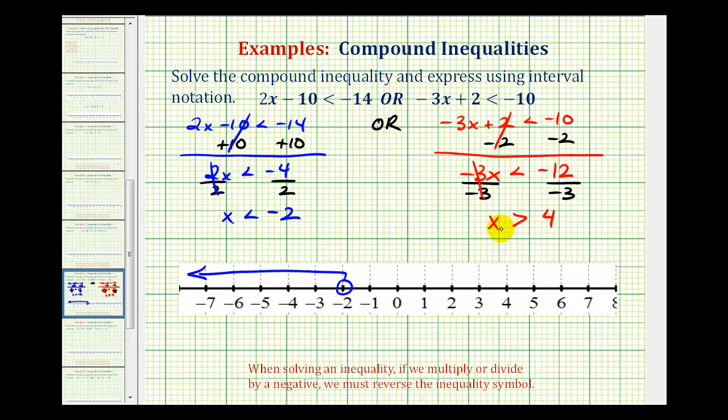Now let's go ahead and graph x is greater than 4. Again, 4 does not satisfy this inequality, so it's not in the interval. So we have an open point on 4. And then for numbers greater than 4, we have an arrow to the right.